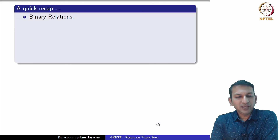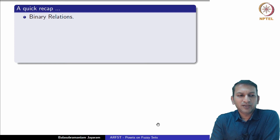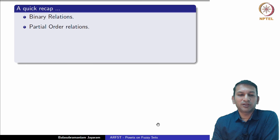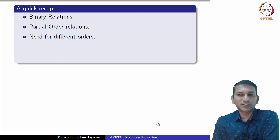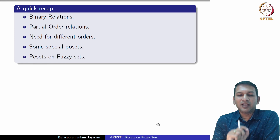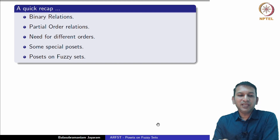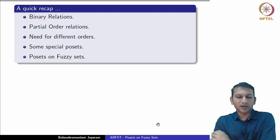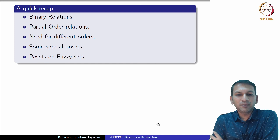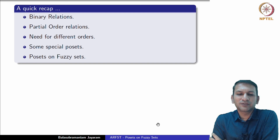A quick recap of today's lecture: we looked at binary relations, especially partial order relations. We have seen that at times there is a need for different orders, as in the case of fuzzy sets where there are two different orders. These lead to special posets. Based on what we have seen on ordered sets, we have been able to look at the orderings introduced earlier as actually being partial orders — either on the general set of all fuzzy sets or on the specific class of convex fuzzy sets on R.